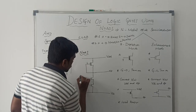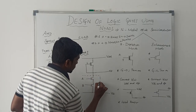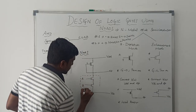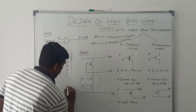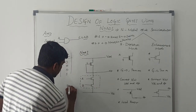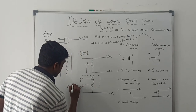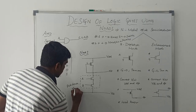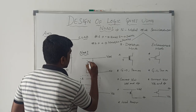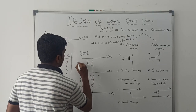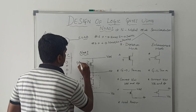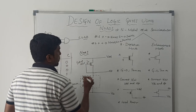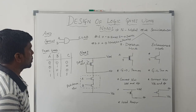This transistor network connected between VSS and the output is called the pull-down network. So we have a pull-down network and a pull-up network in this circuit.